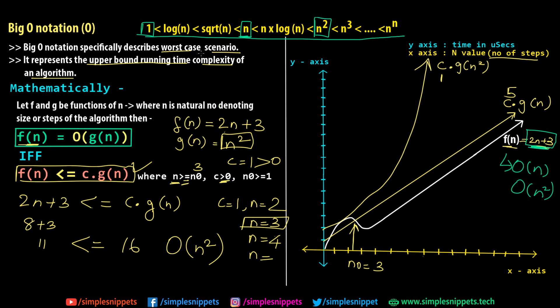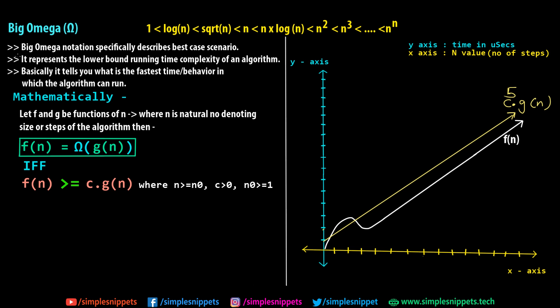Now let's see the best case scenario: the big omega notation. Big omega notation specifically describes the best case scenario — it represents the lower bound running time complexity of an algorithm. It's basically the opposite of big O: big O was the worst case, while big omega gives the best case. It tells you the fastest time behavior in which the algorithm can run given a particular input size.